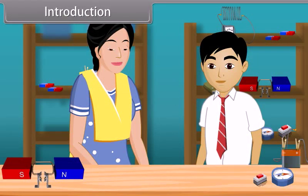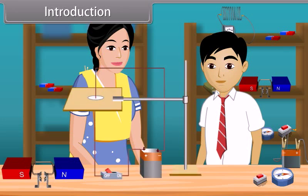Today, our physics teacher is going to perform an experiment in the physics lab. She starts the experiment in front of the students. She took a cardboard having a hole at the center, made an electronic circuit and passed the wire through that hole. Then she sprinkles the iron dust on the cardboard uniformly.